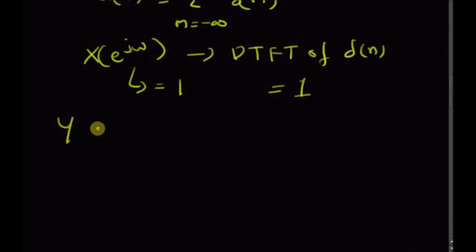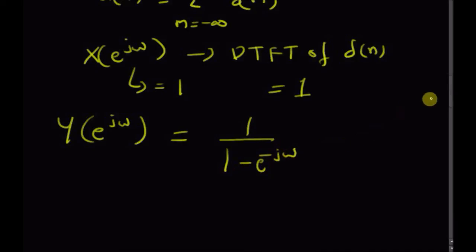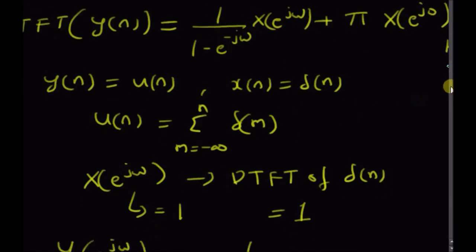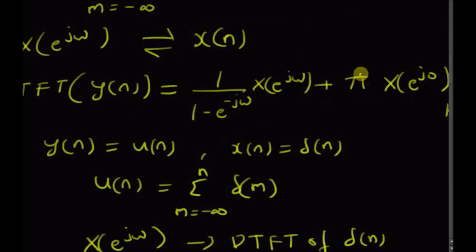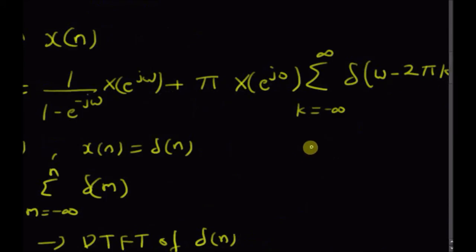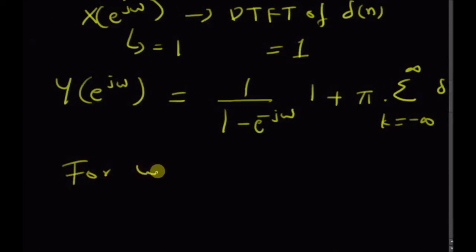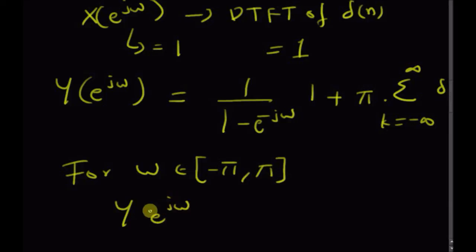So now we can write the formula for Y(e^jω), the DTFT of the unit step sequence. It is equal to 1/(1 - e^(-jω)), the first term, plus π times X(e^jω) which is 1, and the final term is the summation from k = -∞ to +∞ of δ(ω - 2πk).